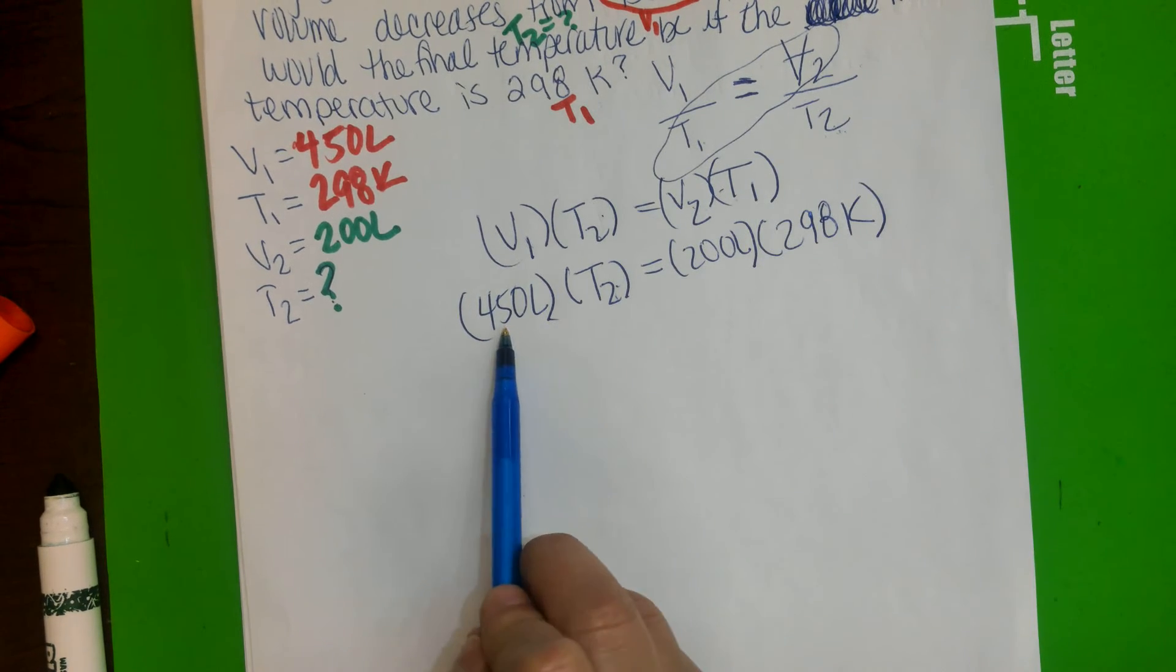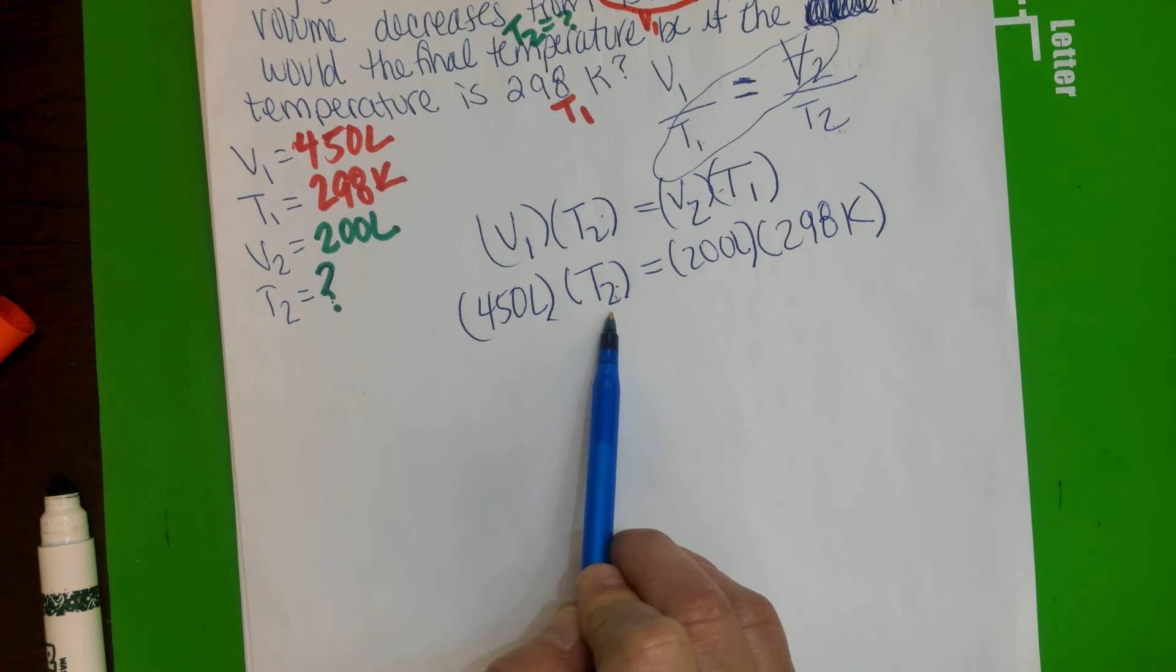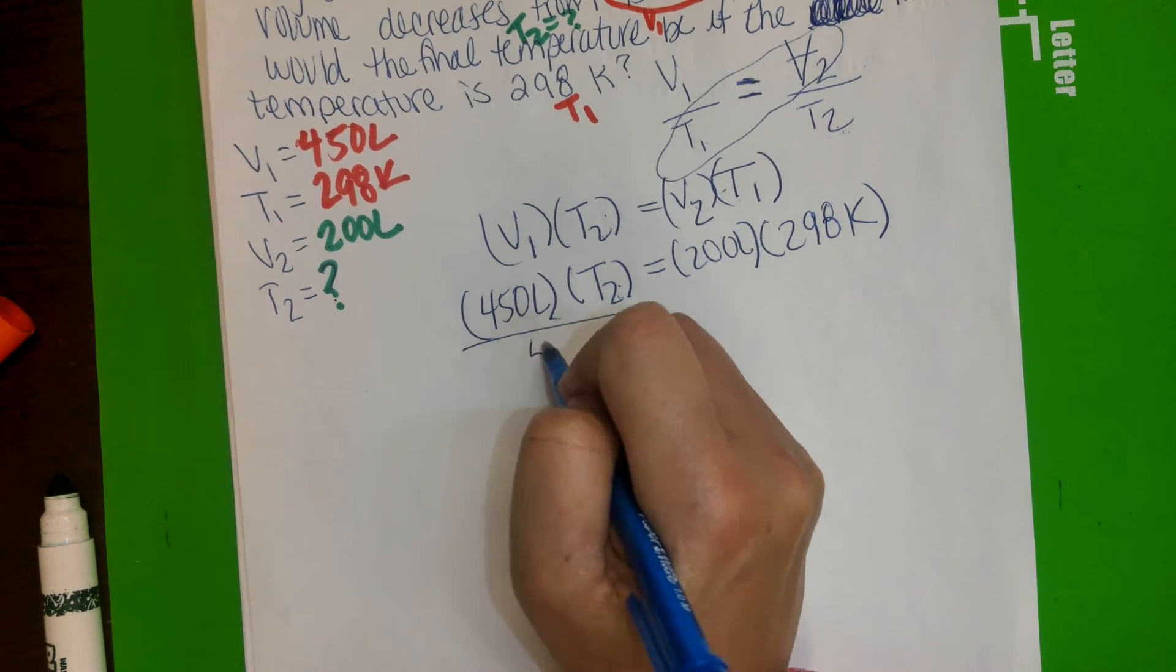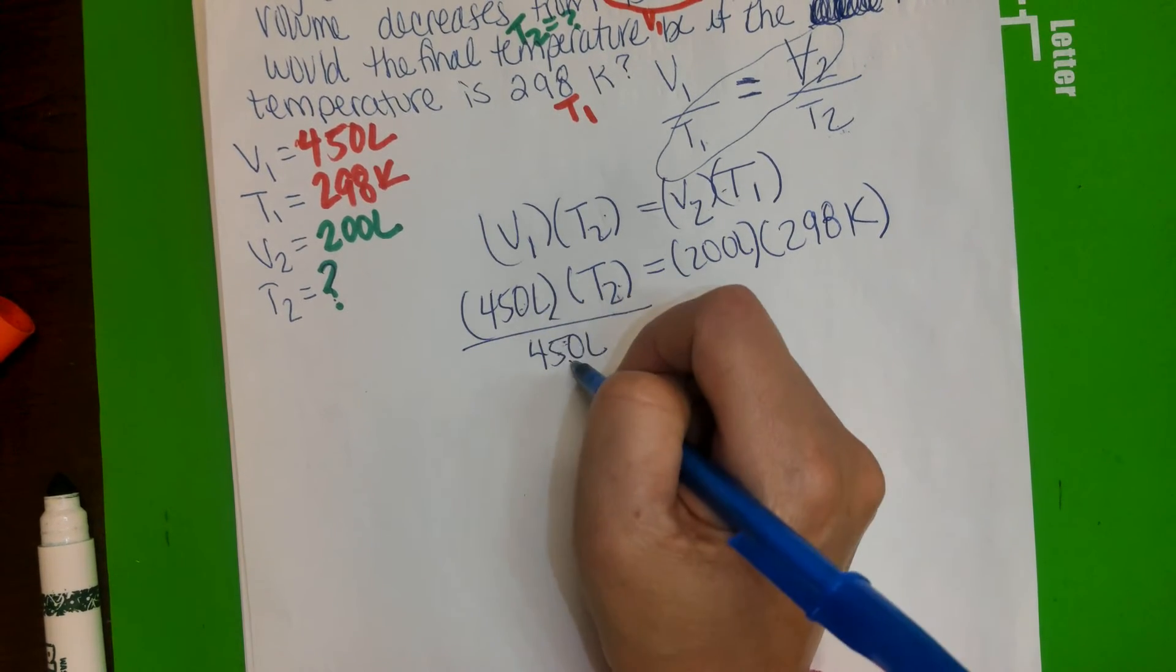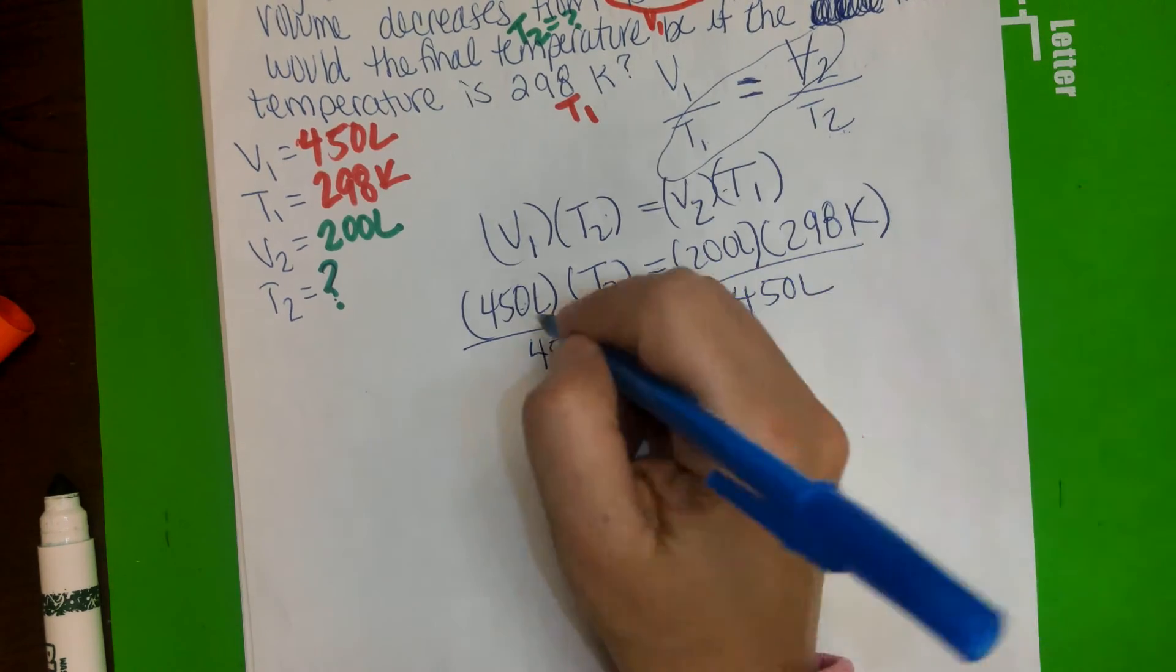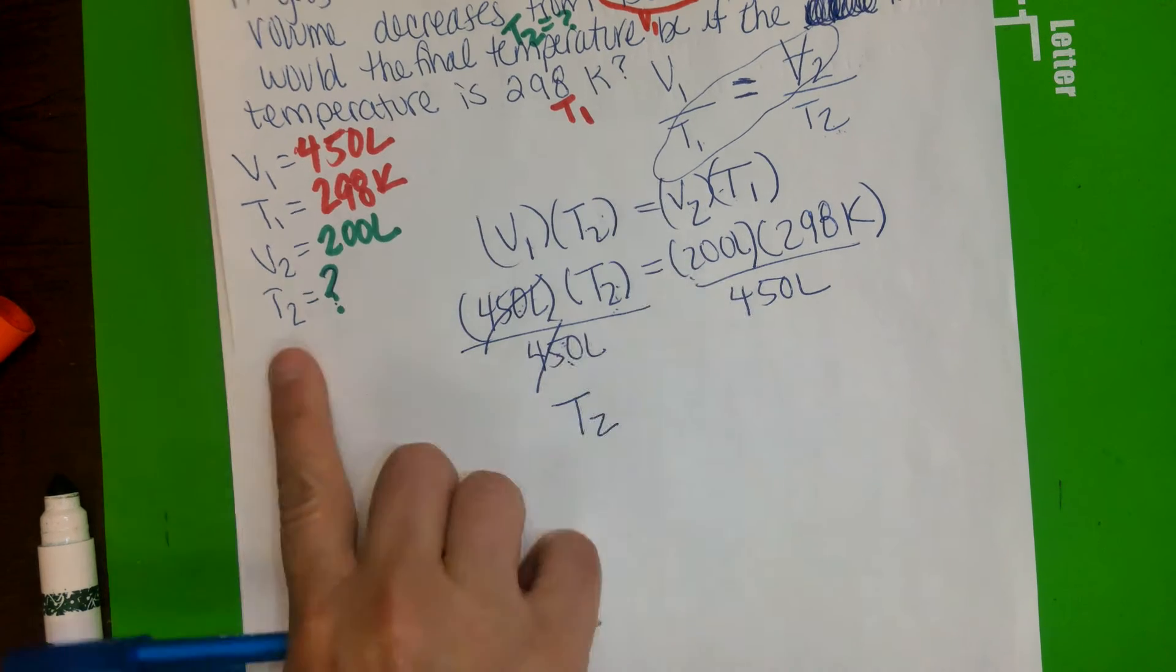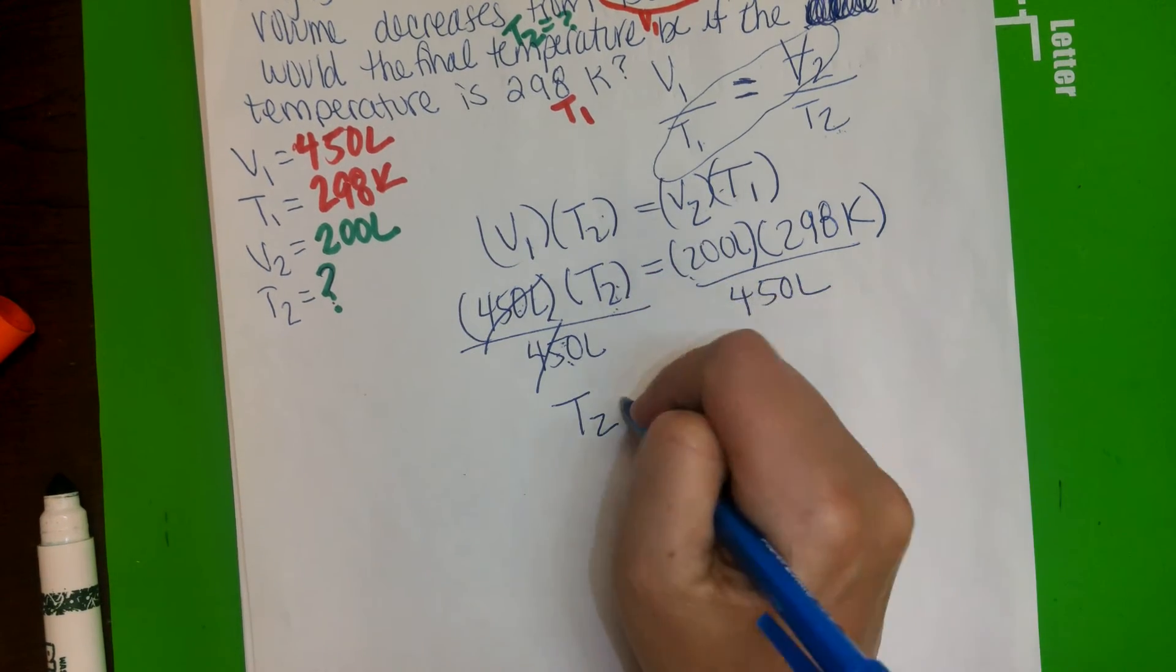In here, we need to move the 450 because we need this variable by itself. We do the opposite of the math that is occurring here. This is multiplying, so the opposite of that is division. It will be 450 liters, that's the one we want to move, so that's the one we're going to divide. We do the same thing to the other side of the equal sign, which is 450 liters, and then you cancel. Now T2 is by itself. Perfect, because that's what we want to solve.